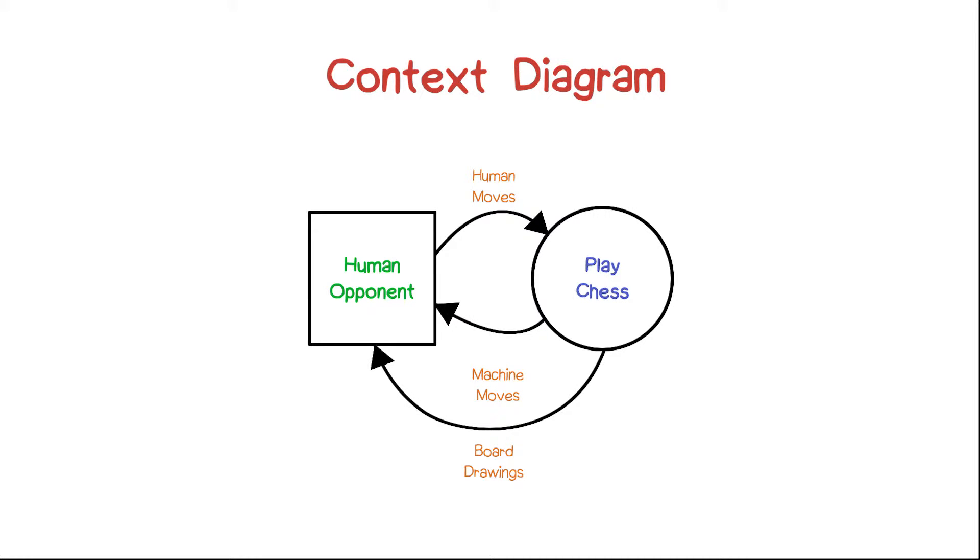The human opponent can submit moves to the chess playing program. Similarly, the chess playing program can communicate moves back to the human opponent, or the chess playing program can produce a diagram of the current board situation.